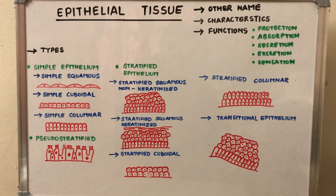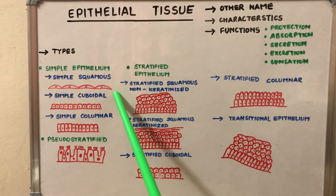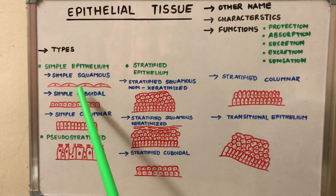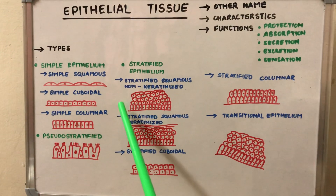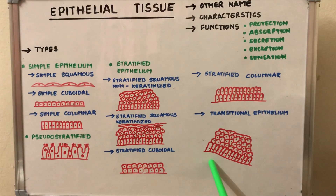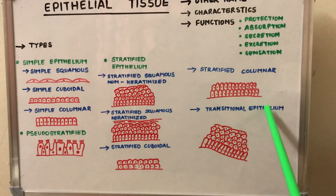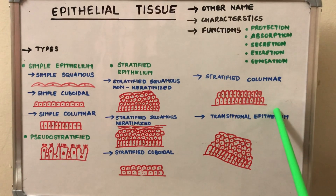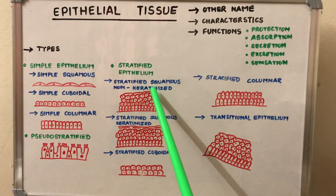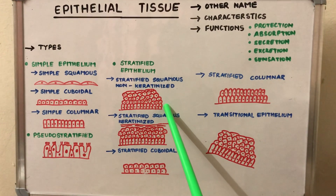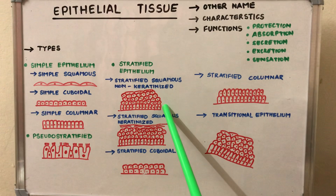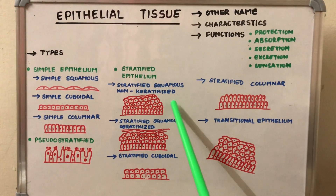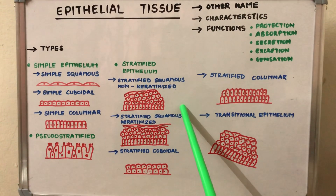The epithelial tissue has four basic characteristics. First, the cells are arranged in a single layer or multiple layers. Second, the cells lie on a basement membrane, also known as the basal lamina. Third, there is minimal or no intercellular substance between the cells.